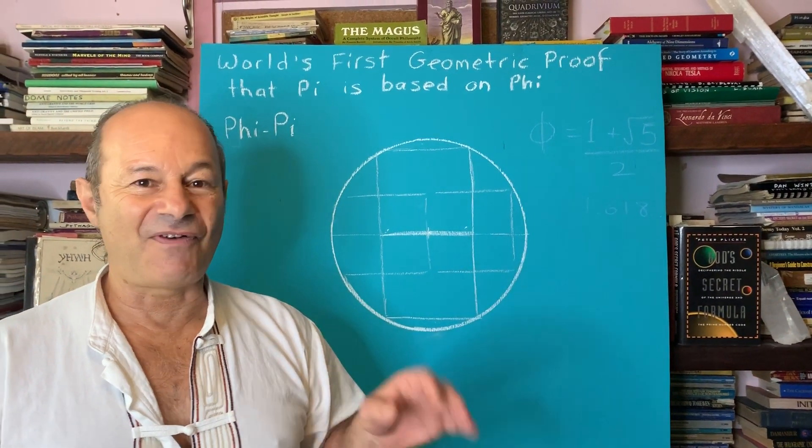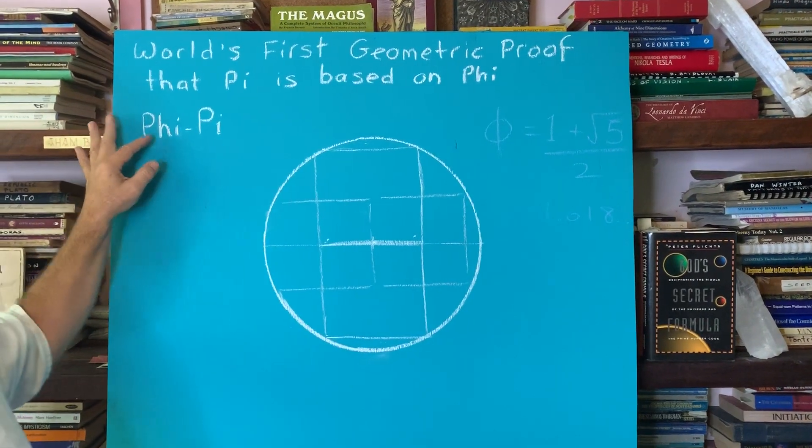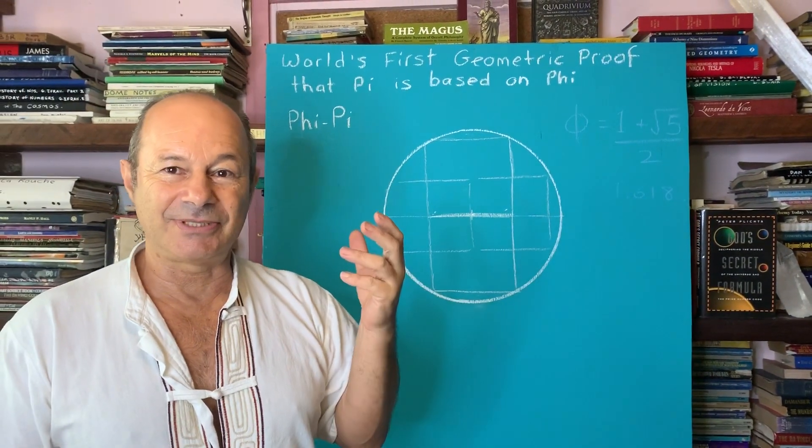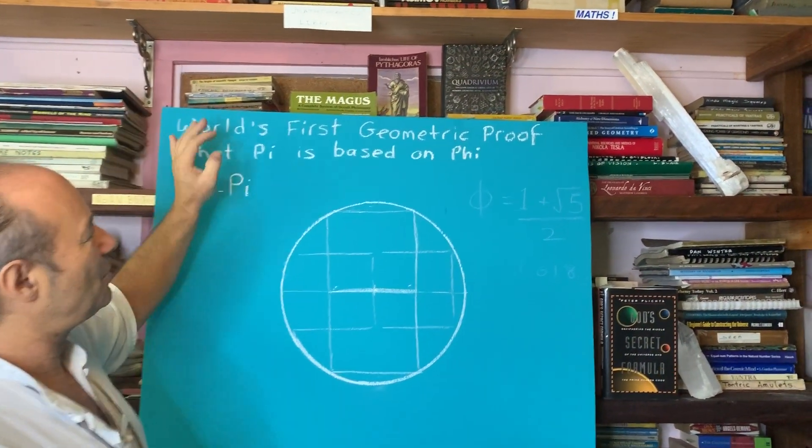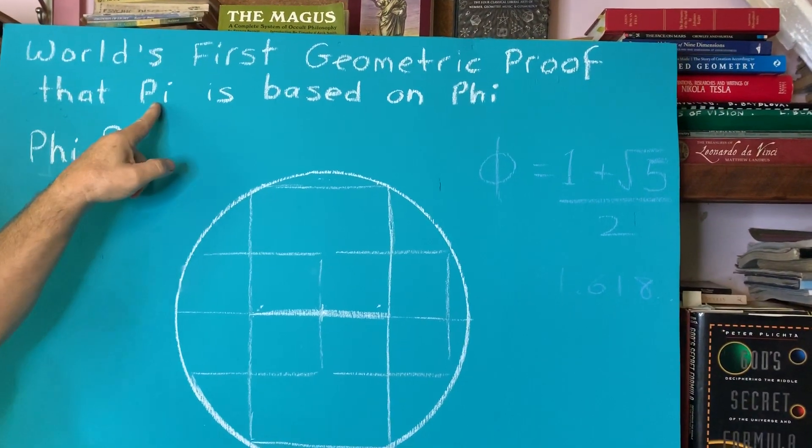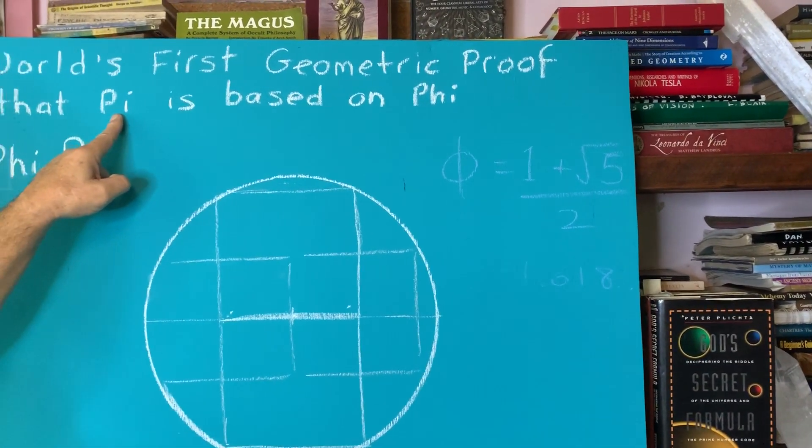Today's lecture is on the Phi-Pi relationship. This is something that I've discovered about 20 years ago. I'd like to discourse and establish that this is the world's first geometric proof to show that Pi, the relationship of the circle to its diameter, 3.141...